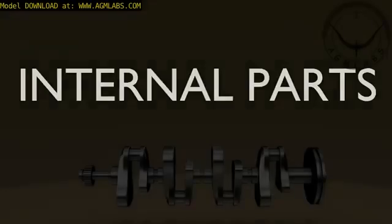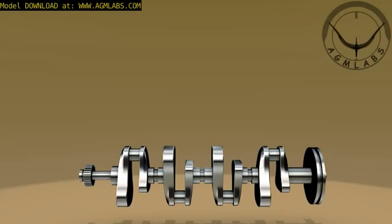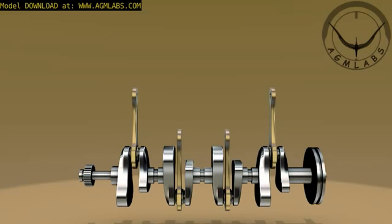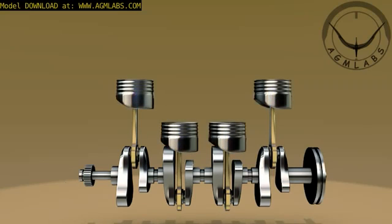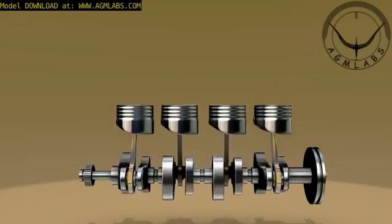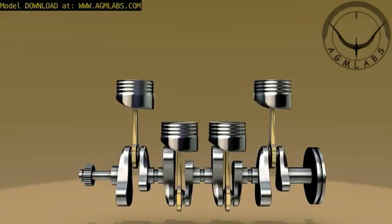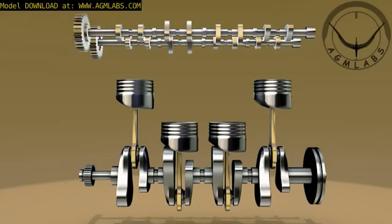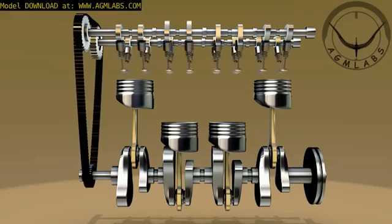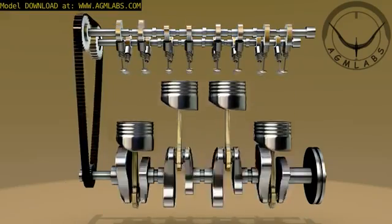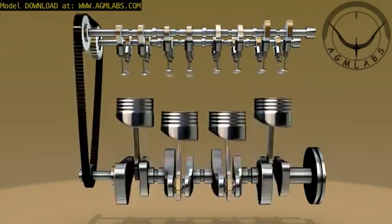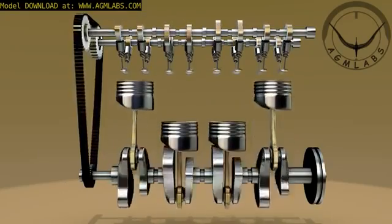Let's take a look at the basic internal parts of a four-stroke engine. Inside the engine block, there is a crankshaft. Piston rods are attached to the crankshaft. Pistons are attached to the piston rods. As the crankshaft turns, it causes each piston to move up and down. At the top, there is a camshaft which is connected to the crankshaft by a timing belt. While the crankshaft makes the pistons move up and down, the camshaft turns, making the valves open and close.